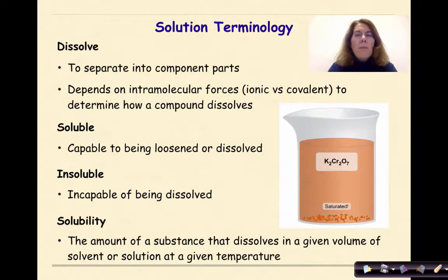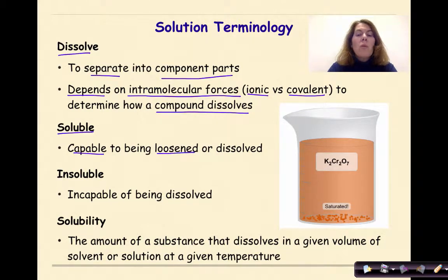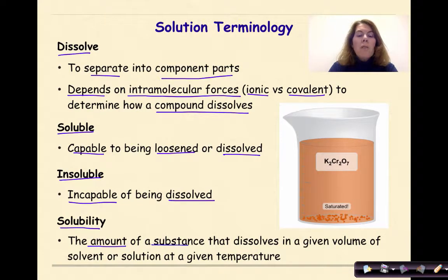These mixtures do not contain visibly different parts — think of salt water as an example. To dissolve is to separate into smaller component parts. Whether or not something will dissolve depends on intramolecular forces, like ionic versus covalent bonds. The term soluble means capable of being dissolved; insoluble means incapable of being dissolved; and solubility is the quantified amount of a substance that dissolves in a given volume of solvent at a given temperature.